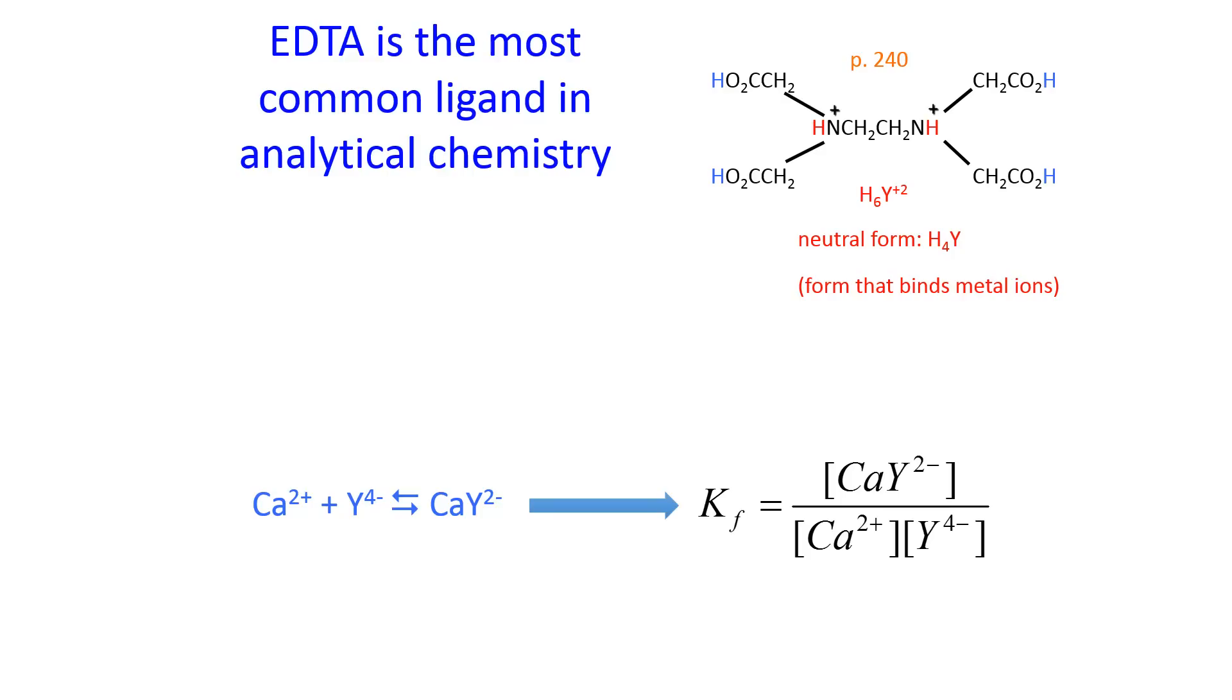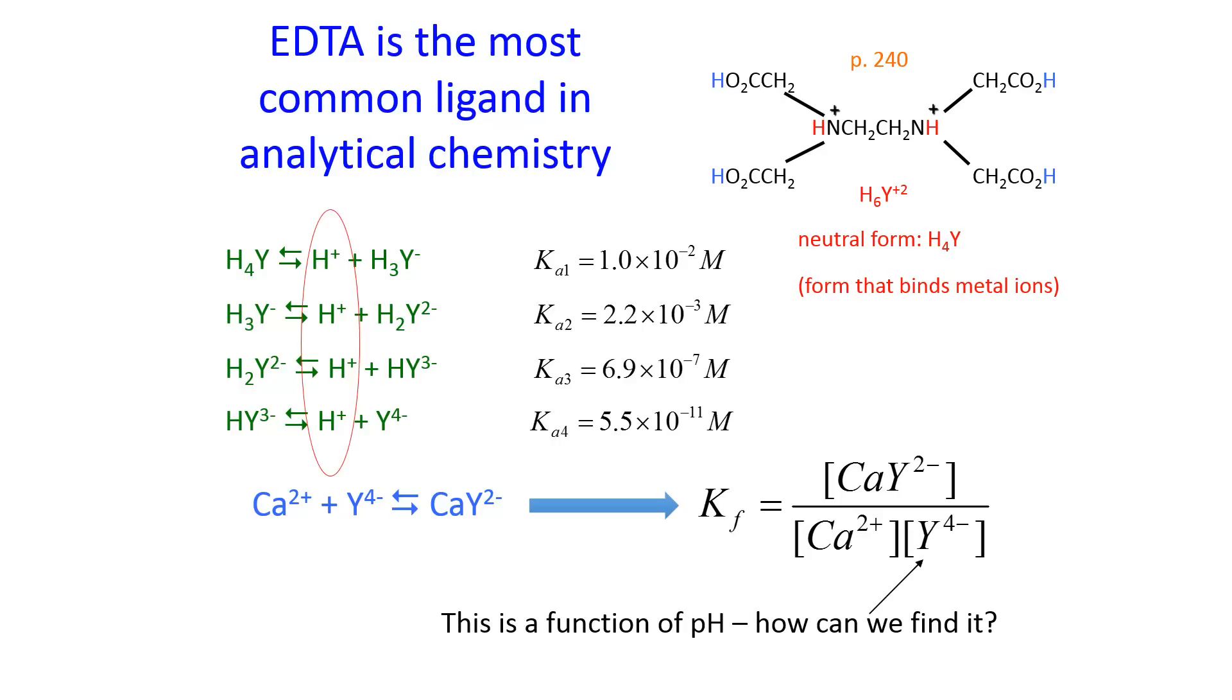The problem though, with this formation constant is that not all EDTA is in this form, Y4-. It can exist in many other forms. And each of these forms, the transitions between them, have their own K-A. This is just deprotonation. The Y4- concentration, the amount of our EDTA that's in this form, is a function of pH.